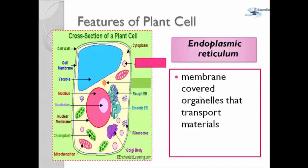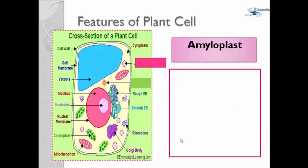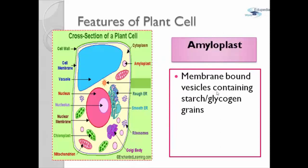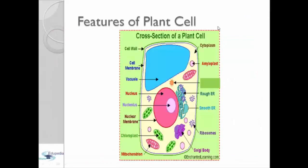This membrane covers organelles that transport materials. The last part is the amyloplast. Amyloplast are vesicles containing starch glycogen grains, which is bounded by a membrane. Starch is a store of sucrose and glucose in plant cells. So these are the features and parts of the plant cells.